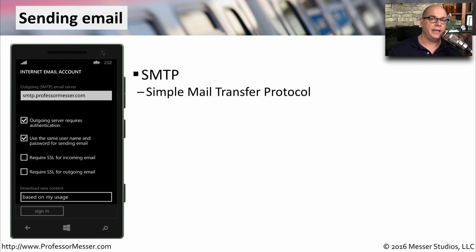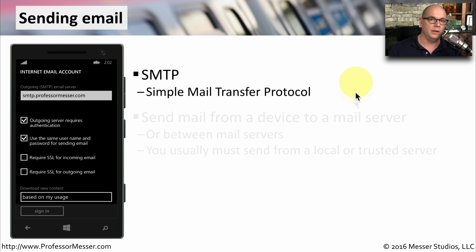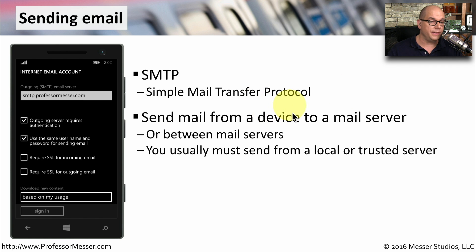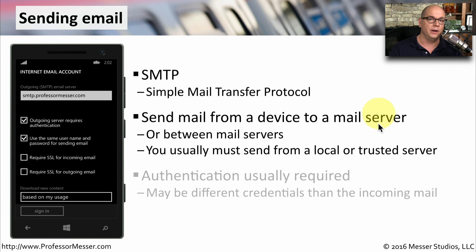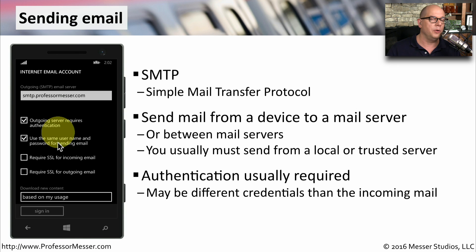That covers receiving email. But of course, we also need to be able to send email. To do that, we use SMTP — the Simple Mail Transfer Protocol. SMTP is commonly used to send mail from our device to a mail server, and it's also the protocol that mail servers use to send mail between each other. We usually have to send mail from either a trusted network or using authentication credentials trusted by the SMTP server. We add those authentication credentials into our mobile device so that when we're sending mail, it automatically sends the authentication as well.